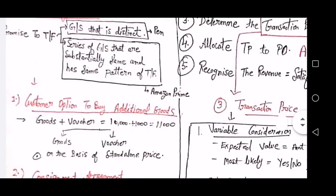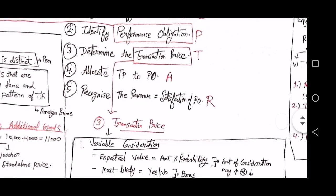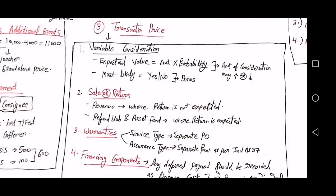Step three is determination of the transaction price. If a standalone price exists, that is the transaction price. If there is variable consideration, the expected value should be calculated as the amount of consideration multiplied by the probability of recovery. If expected value cannot be calculated, use the most likely value — for example, a bonus: if you're entitled, you take the whole amount; if not, you cannot take any amount.